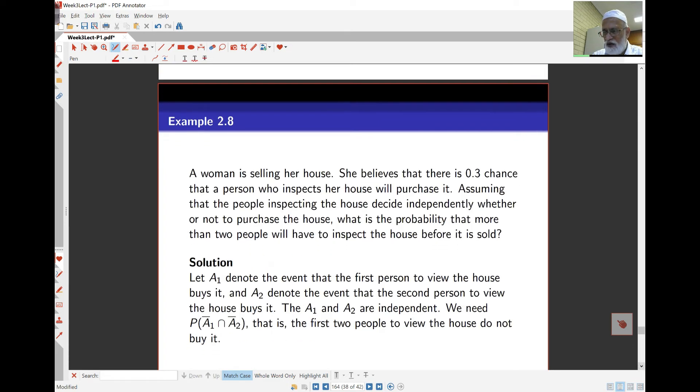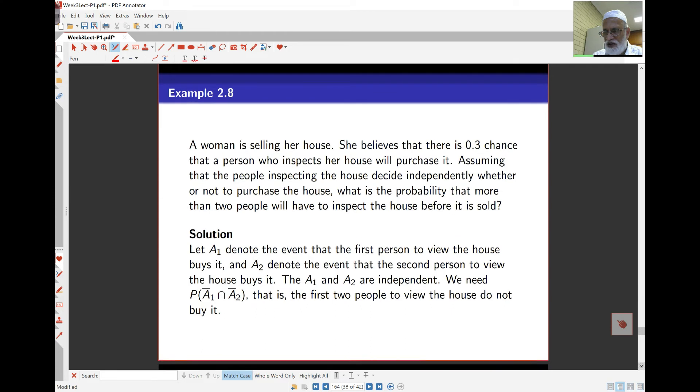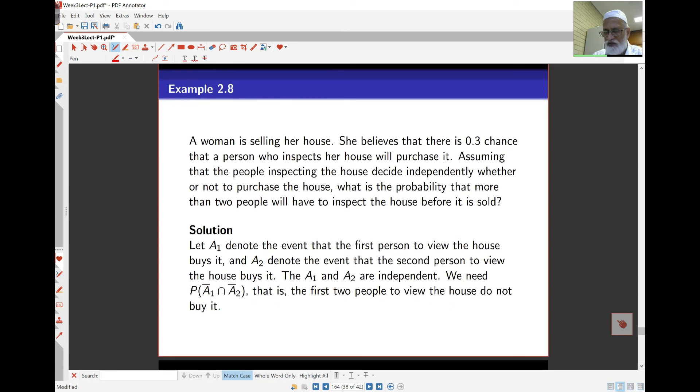Example over here. A woman is selling her house. She believes that there's a 0.3 chance that a person who inspects her house will purchase it. Assuming that people inspecting the house decide independently whether or not to purchase the house, what is the probability that more than two people will have to inspect the house before it's sold?